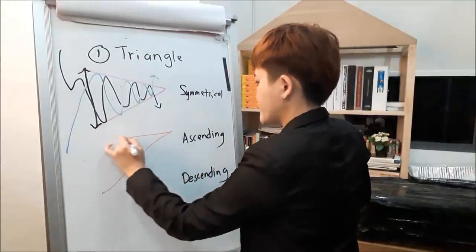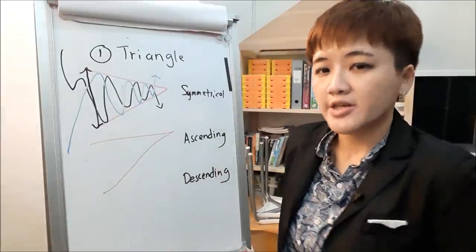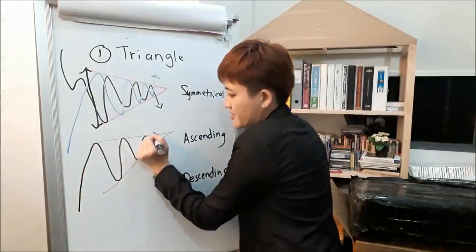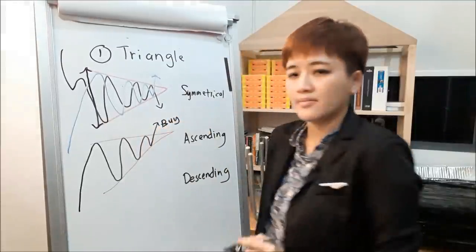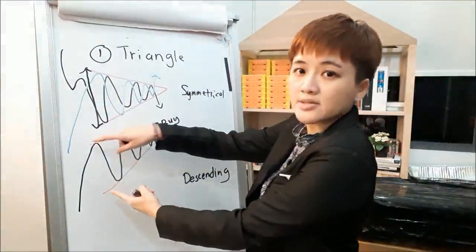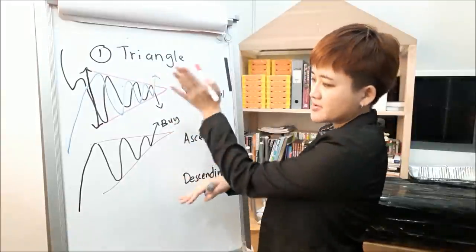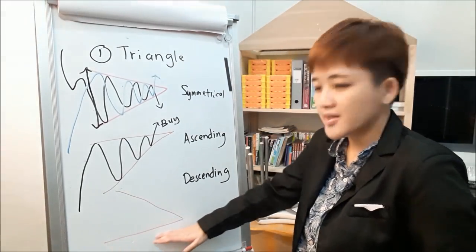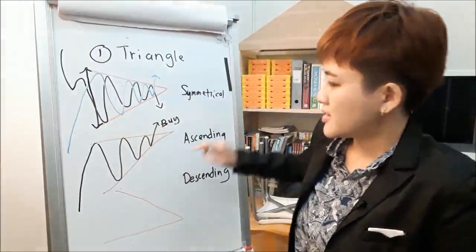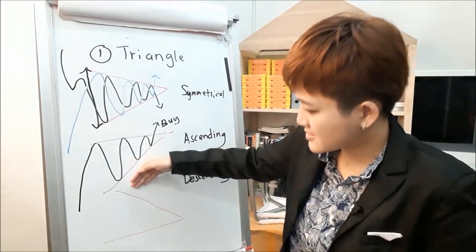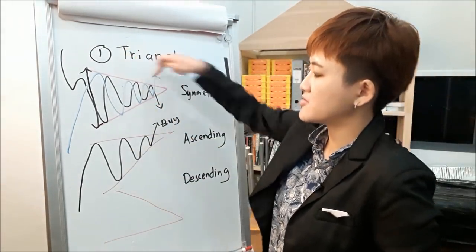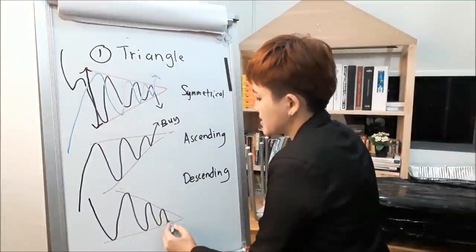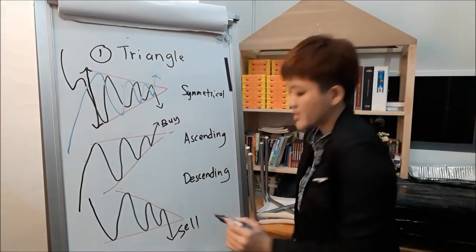Ascending triangle: you're trading in an uptrend, the price consolidates, and when it breaks above you look for a buy. TP target uses the same height measurement. Descending triangle: a horizontal support line with a slanted downward trend line. Price comes down, fills at least two-thirds of the triangle, and when it breaks below you look for a sell. TP target is measured from the top to the bottom of the half triangle, projected downward.